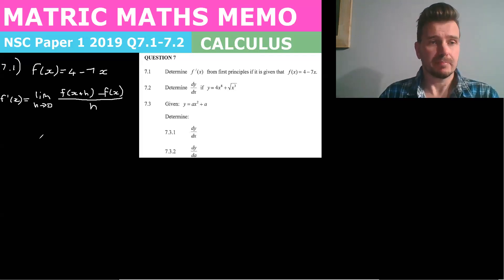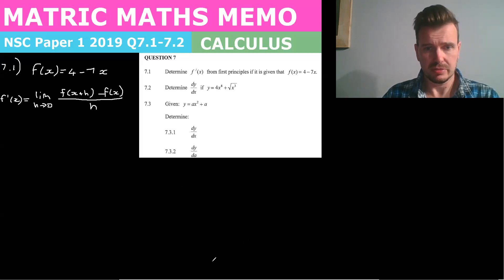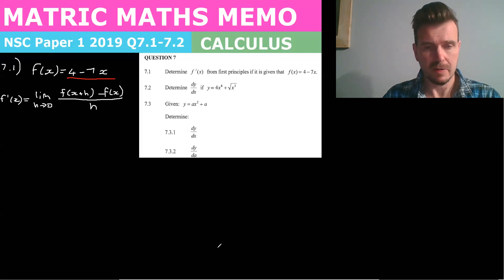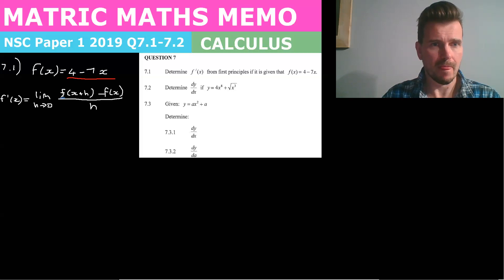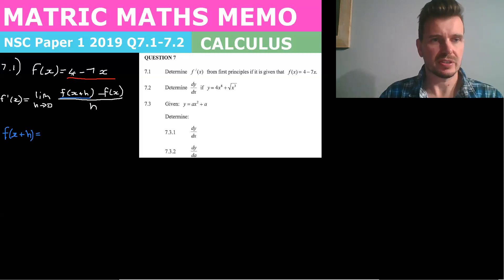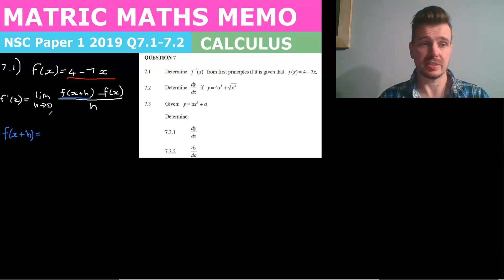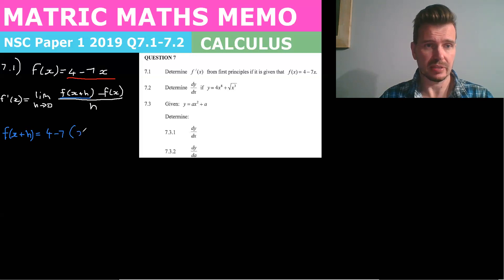So f of x we know is this — let's do it in a different color. We know that f of x is this in red. Now let's do f of x plus h in blue. f of x plus h means that you take f of x, which is 4 minus 7x, and everywhere you see an x you replace it with x plus h. So that'll be 4 minus 7 times (x plus h).